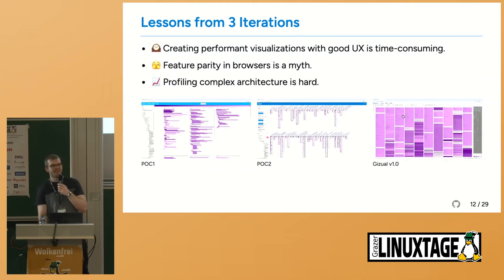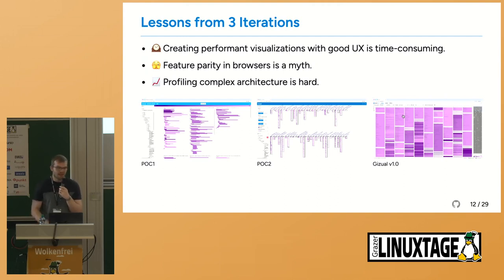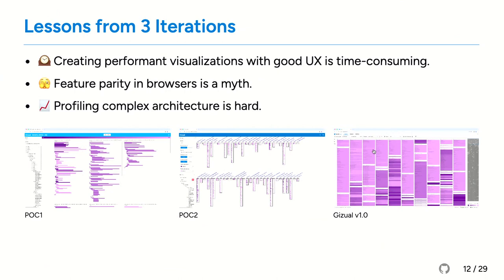What did we learn from doing it three times? First, creating performant visualizations with good user experience and nice aesthetics is very time consuming, which is why we rewrote some code multiple times. Feature parity across current browsers seems perfect but is really a myth — Safari is sometimes memed as the new Internet Explorer. And once you add a bunch of web workers into a complex application, profiling and performance analysis becomes really difficult. At the bottom you can see screenshots of each stage from POC 1 up to version 1.0.